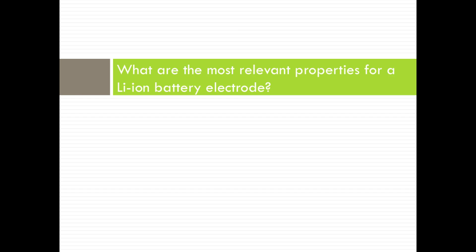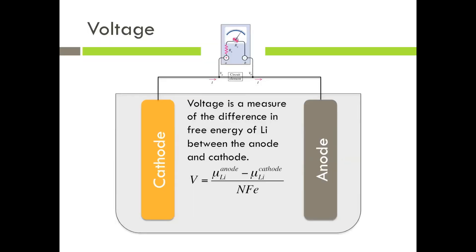Let me now introduce what are the most relevant properties for a lithium-ion battery electrode. One of the most important properties is its voltage. The voltage is a measure of the difference in free energy of lithium between the anode and the cathode. It is given by the expression shown here. While generally higher voltage means higher energy densities, current electrolytes can only support voltages of up to about 5 volts.